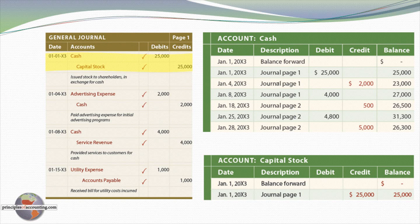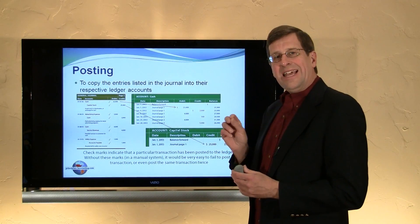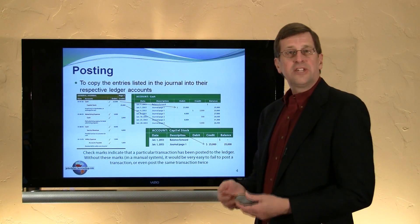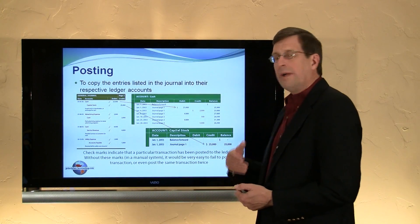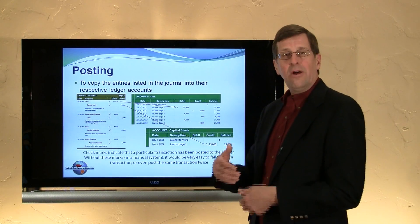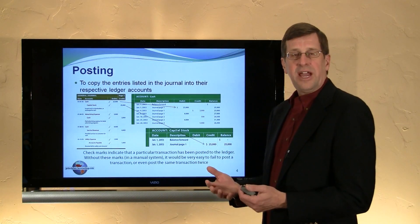Cash went up and was debited $25,000. Stockholders' equity went up $25,000 and was credited. Thus, there was a balanced entry: debit cash and credit capital stock. That information next needs to be sorted or transferred, or posted is the term we use, posted to the ledger account. This might be done monthly or weekly, or in a computerized system on a real-time basis.